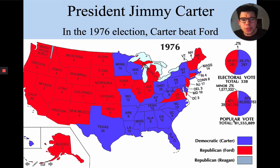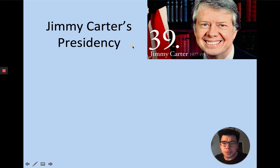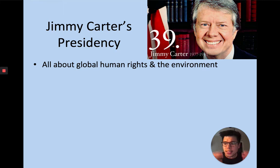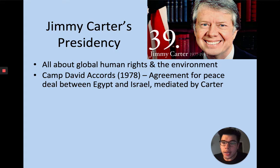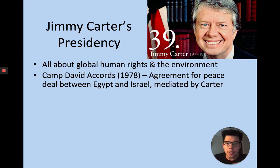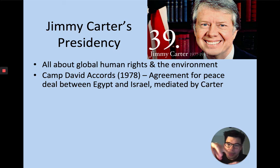Jimmy Carter's presidency is primarily about global human rights — being diplomatic about countries violating human rights — and also looking out for the environment. Jimmy Carter installed solar panels on the roof of the White House. Maybe his most significant accomplishment was the Camp David Accords, where he was able to broker a peace deal between Egypt and Israel, one of the biggest issues in the Middle East involving conflict between the Islamic community and the Jewish community.